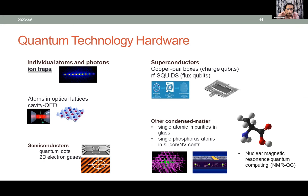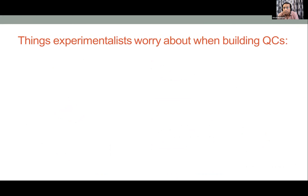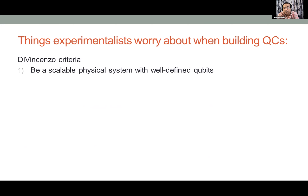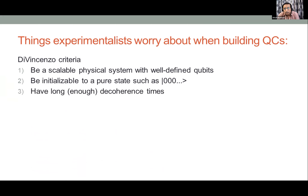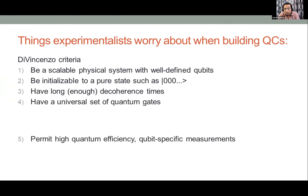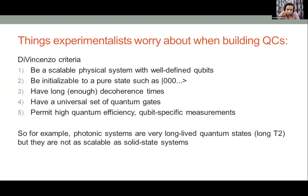I will focus on individual atoms because every technology has advantages and disadvantages. There is a famous set of criteria — the DiVincenzo criteria — that should be fulfilled for a full-scale quantum computer. The system should be a scalable physical system with well-defined qubits, initializable to a pure state, have a long enough coherence time, have a universal set of quantum gates, and permit high quantum efficiency qubit-specific measurements.